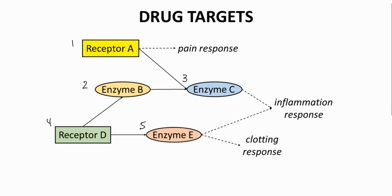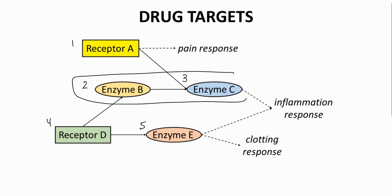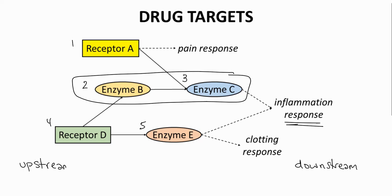So how do we select a target? Proteins connected to just one response pathway are preferred. Of the targets on the screen, Enzyme B and Enzyme C are linked to just the inflammation pathway, making them the most attractive targets. In general, the proteins closer to the response are more favorable — these are said to be more downstream, rather than upstream on the left.